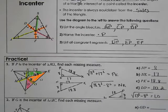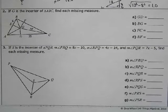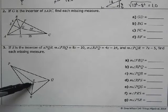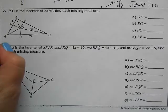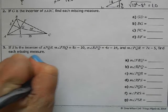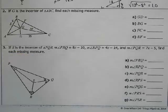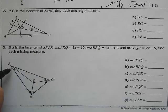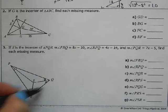So now let's take a look at a more complicated problem. Again, we know the incenter is created by the angle bisectors. So we know that we can mark these angles congruent. So angle PRQ, so PRQ, this whole angle is 8x minus 10.